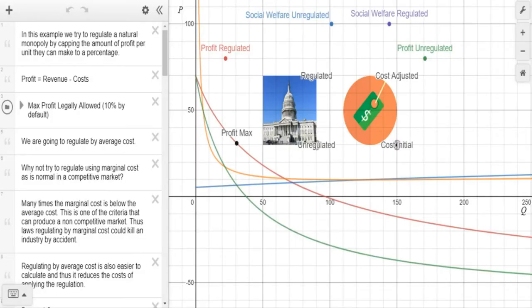So we are in Desmos for another demo. In this example, we will try to regulate a natural monopoly by capping the amount of profit per unit they can make to a percentage.